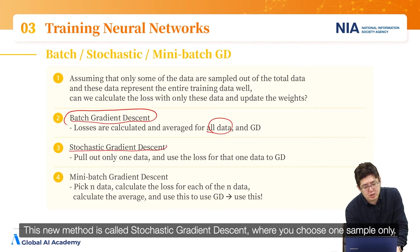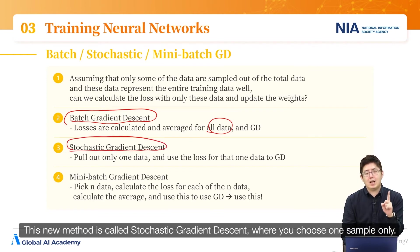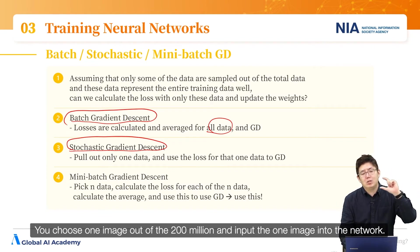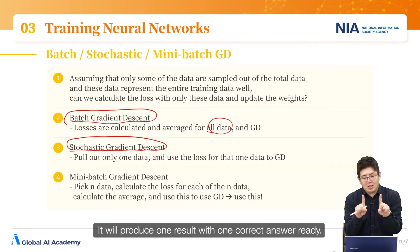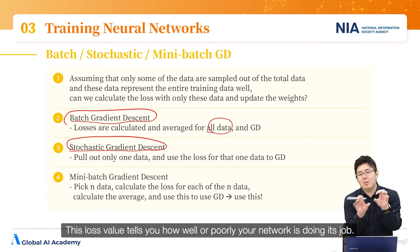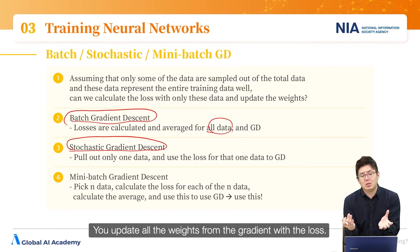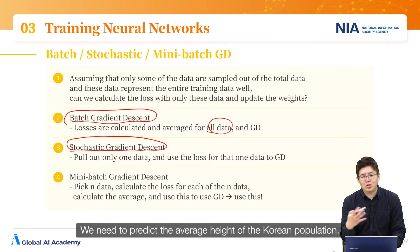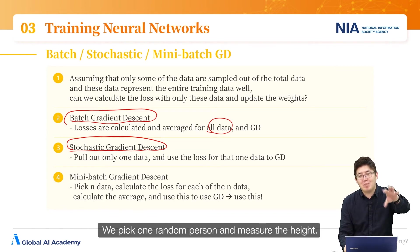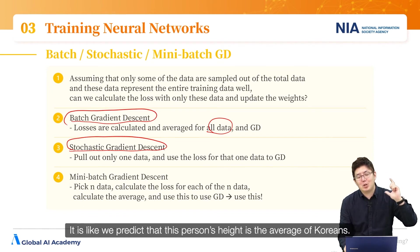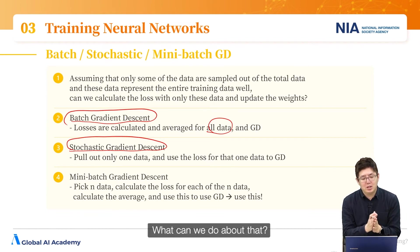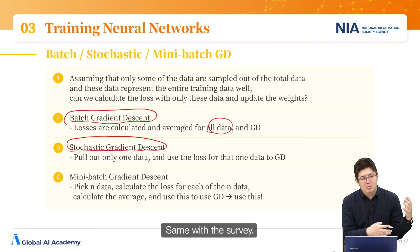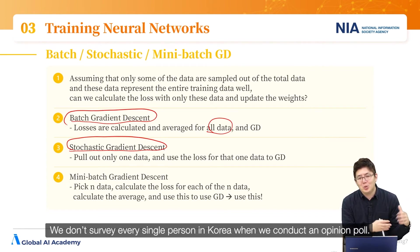This new method is called stochastic gradient descent, where you choose only one sample. You choose one image out of the 200 million and input just that one image into the network. It produces one result; with one correct answer ready, you find the loss by comparing the two. You then update all the weights from the gradient with that loss. It's like trying to predict the average height of the Korean population by measuring just one random person — obviously highly inaccurate.